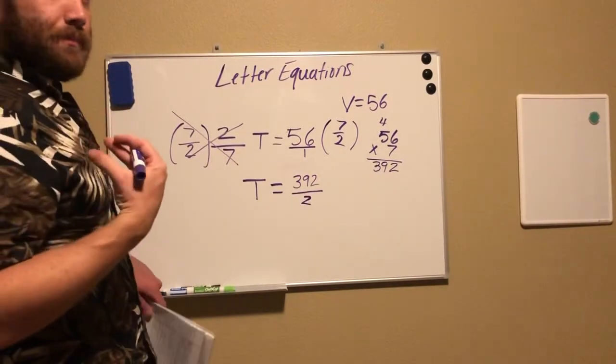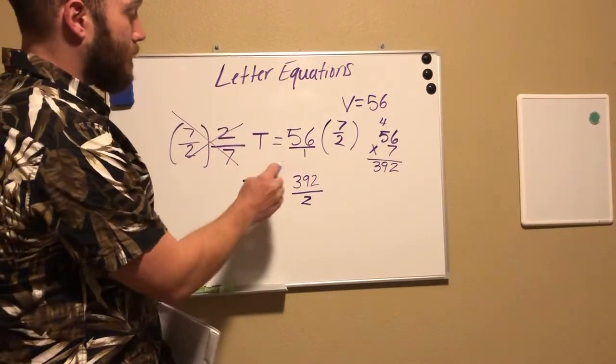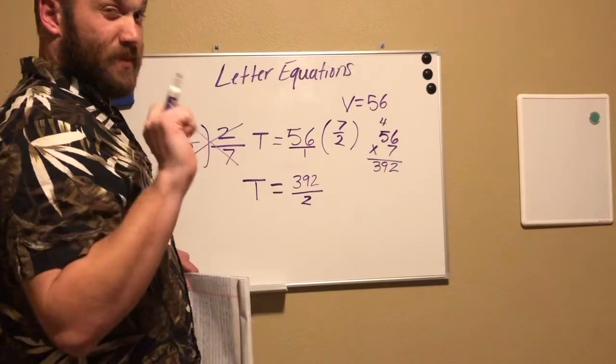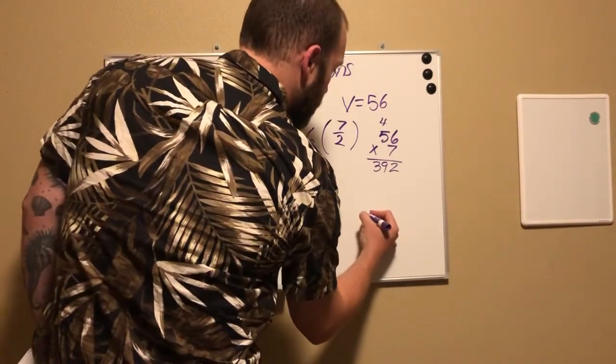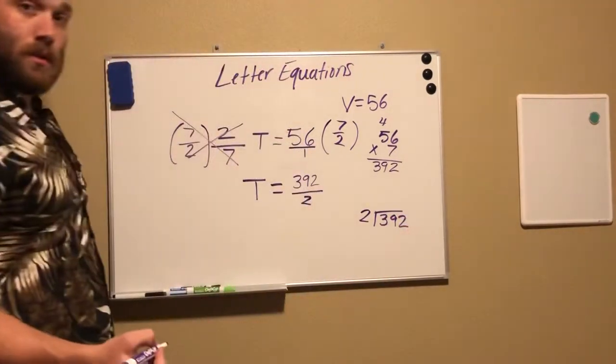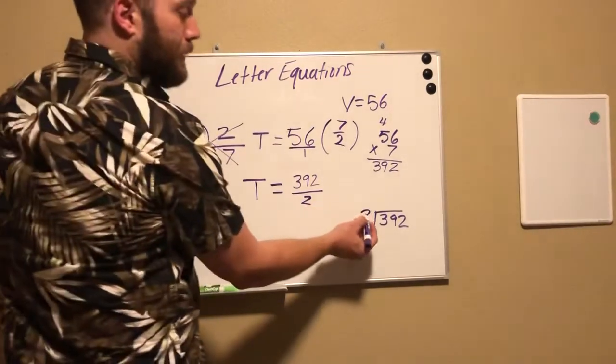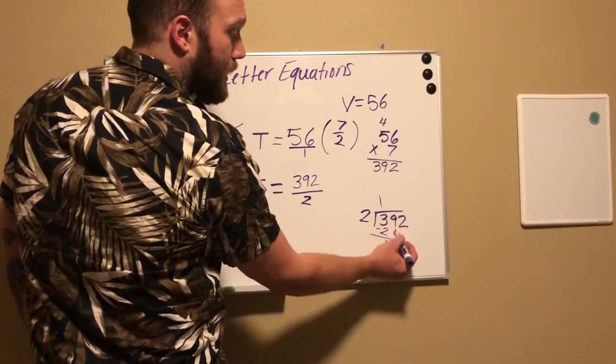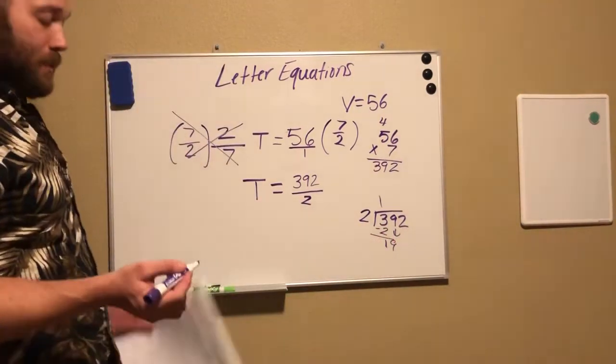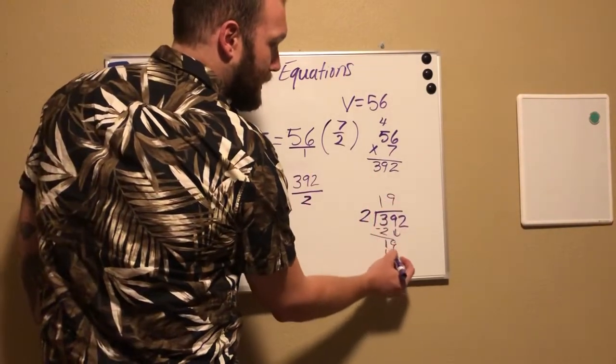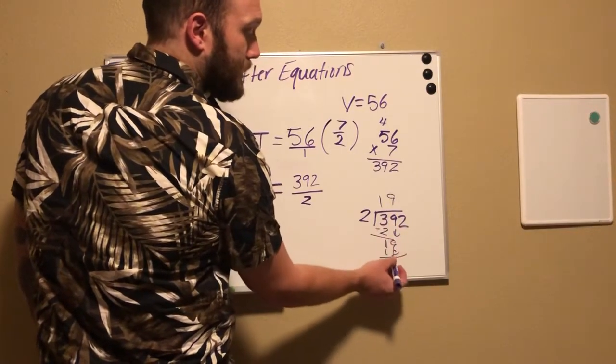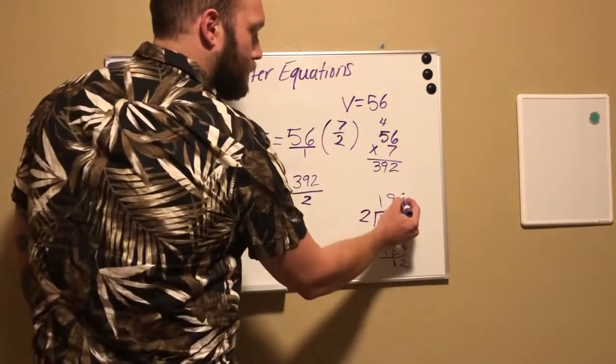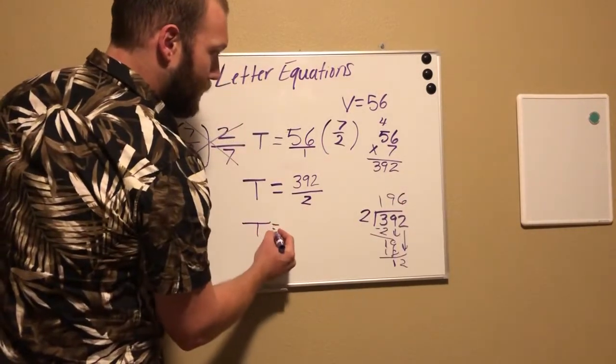That's a fraction. I want a whole number. So I have 392 halves. What would I do to turn that into a whole number and not a fraction? Divide it. So I have 392 divided by 2. How many times can two go into three? One time. One times two is two. Subtract that, I have one. Bring down my nine. Two can go into 19 how many times? Nine, because nine times two is 18. 19 minus 18 is one. Bring down the two. Last part: 12 divided by two is six. There's my answer. So I know T equals 196.